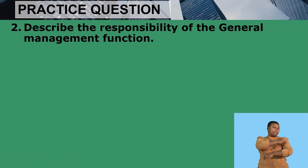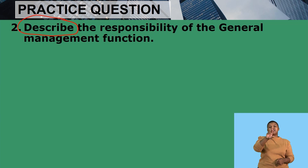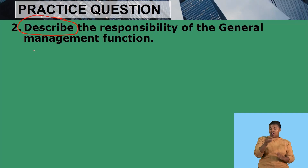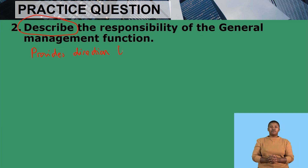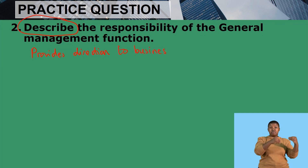Our second question states: describe the responsibility of the general management function. The word 'describe' tells us we must discuss in full sentences. So firstly, we will state that general management provides direction to the business — they provide direction by giving the vision and the goals of the business.